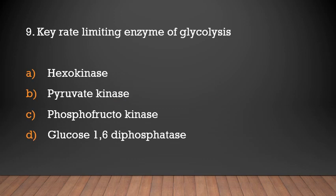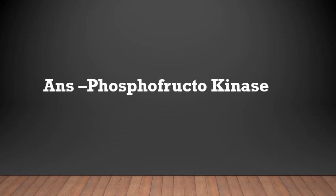The key rate-limiting enzyme of glycolysis is: hexokinase, pyruvate kinase, phosphofructokinase, or glucose 1,6-diphosphatase? Answer: Phosphofructokinase. It is the rate-limiting enzyme of glycolysis.